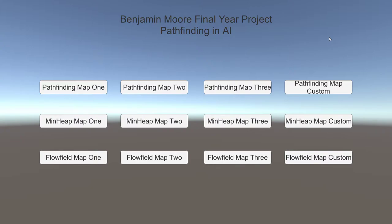Hi, my name is Ben Moore and what we have here is my final year project, aka my dissertation. I had multiple goals I wanted to achieve for this project. One was to compare multiple algorithms and determine the most efficient in different scenarios. This will be based on the time it took to calculate a path and the path efficiency.